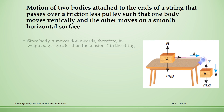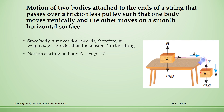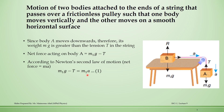Body A is moving in the downward direction, which means the weight of this block is greater than the tension produced in the string. So the net force acting on body A is M1G minus T. By applying Newton's second law of motion — net force equals mass times acceleration — we get: M1G − T = M1A. This is equation number 1.